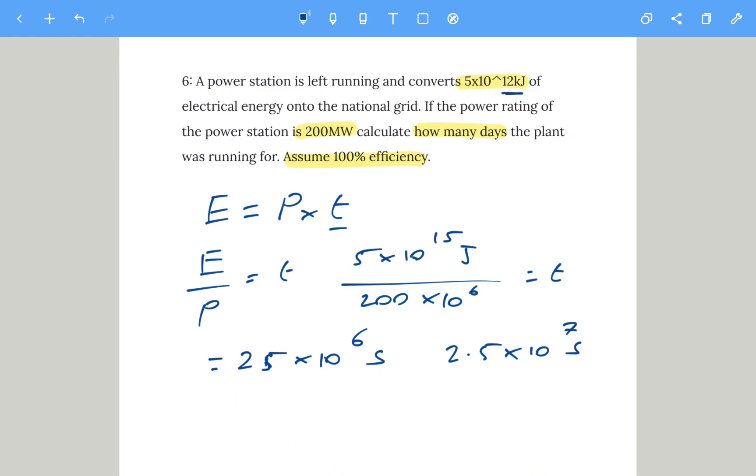Once we've got that, we need to figure out how many days that is. There are 60 seconds times 60 minutes times 24 hours in a day, which gives you 86,400 seconds. Then we just do 25×10^6 divided by 86,400 seconds in a day. Pop that in your calculator and that will give you 289 days.